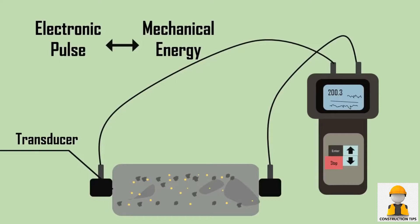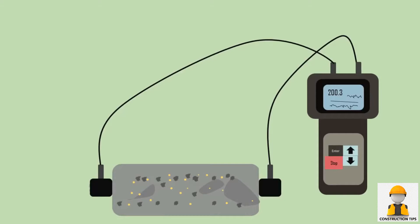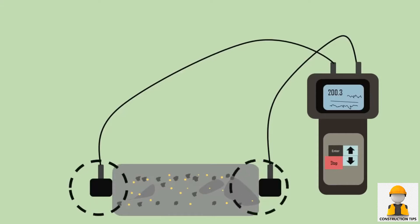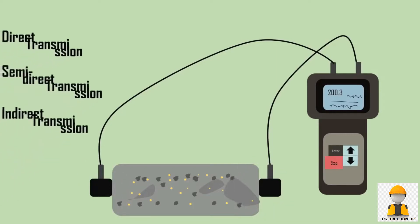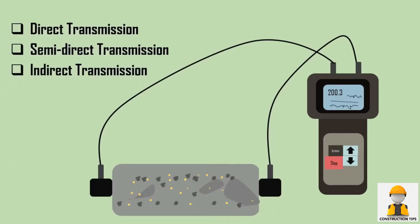A transducer is placed at one end of the concrete and the other is placed at the other end. The transducer arrangement can be of any of the following types: direct transmission, semi-direct transmission, and indirect transmission.